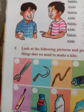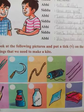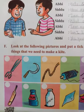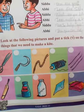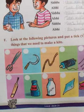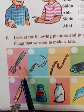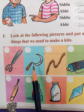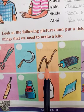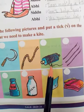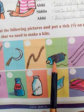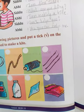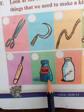Now the next activity: look at the following pictures and put a tick on the things that we need to make a kite. The pictures shown are: scissors, a sickle, a rope, thread or yarn, wooden sticks, and a bat. Let's decide which ones are needed.